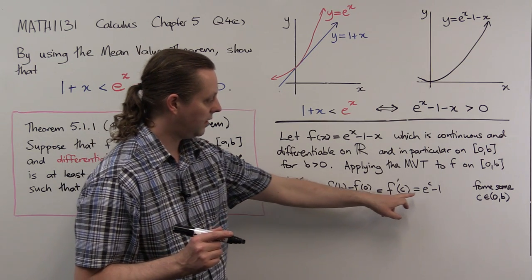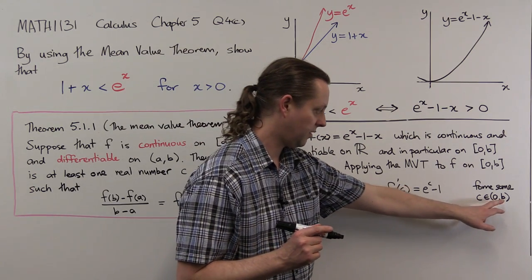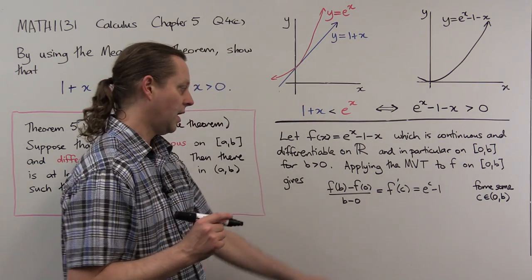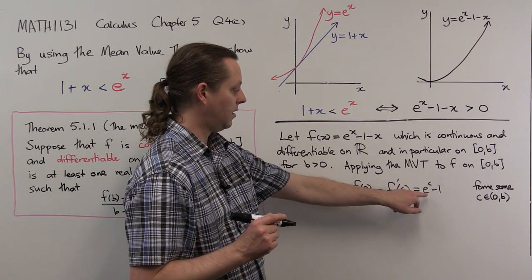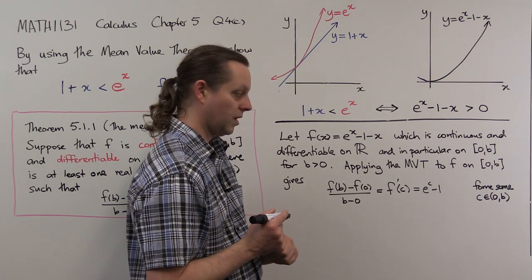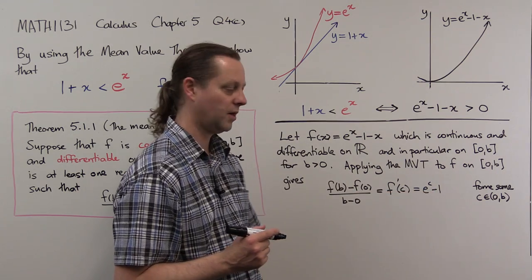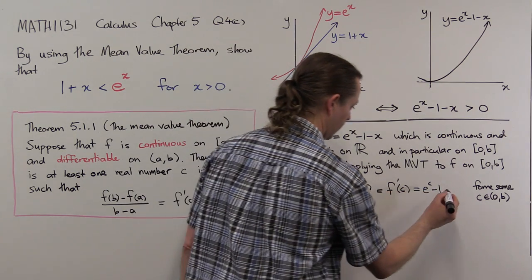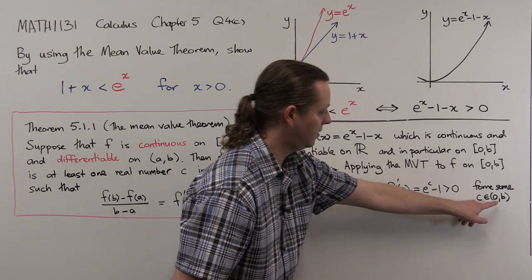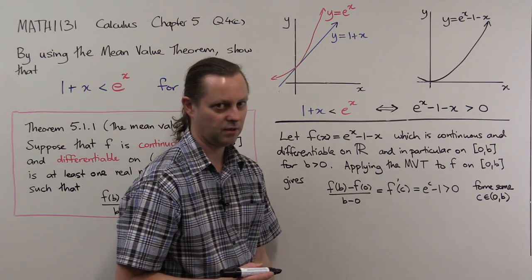This c isn't any arbitrary number — it's definitely in the interval (0, b), so in particular c is greater than 0. If c is greater than 0, then e to the c is greater than 1. So if we subtract 1 from e to the c, we get something positive. Because c is positive, e to the c minus 1 is positive.